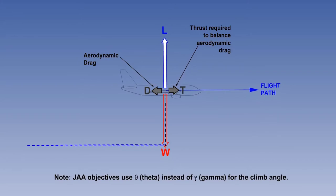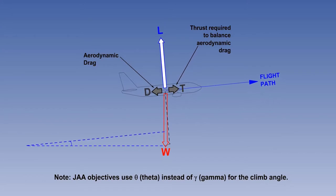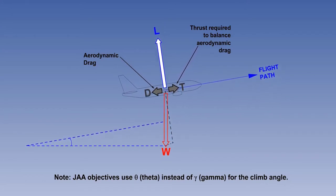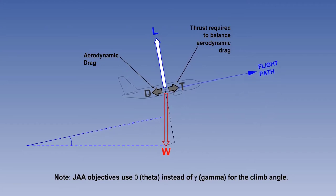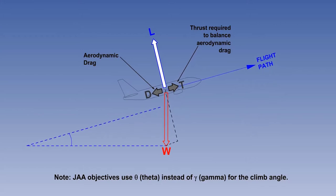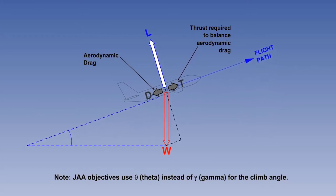With the aircraft in a climb at an angle to the horizontal, the Greek letter gamma denoting the climb angle, the weight vector is inclined backwards relative to the flight path at the same angle as the climb flight path is to the horizontal. Note that the JAA objectives use the Greek theta instead of gamma for the climb angle.